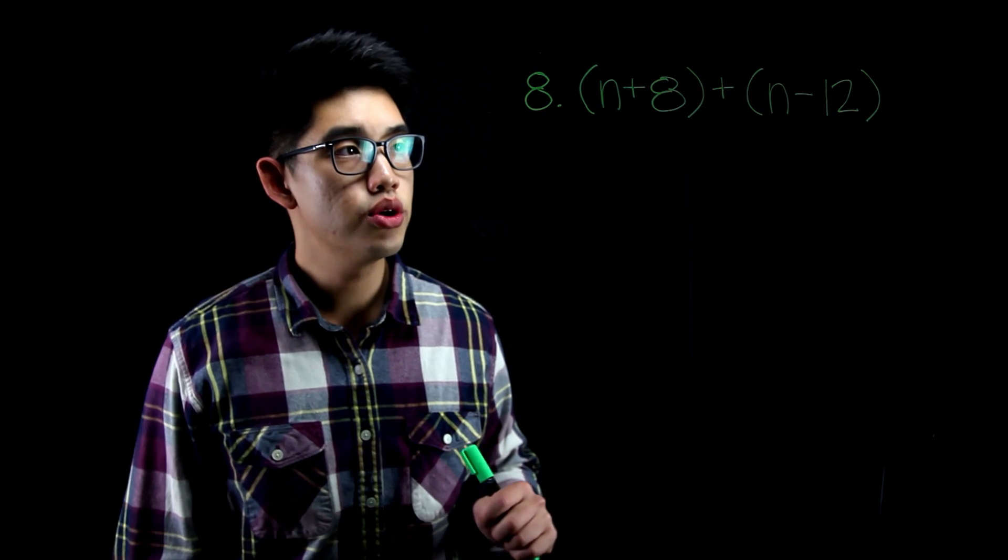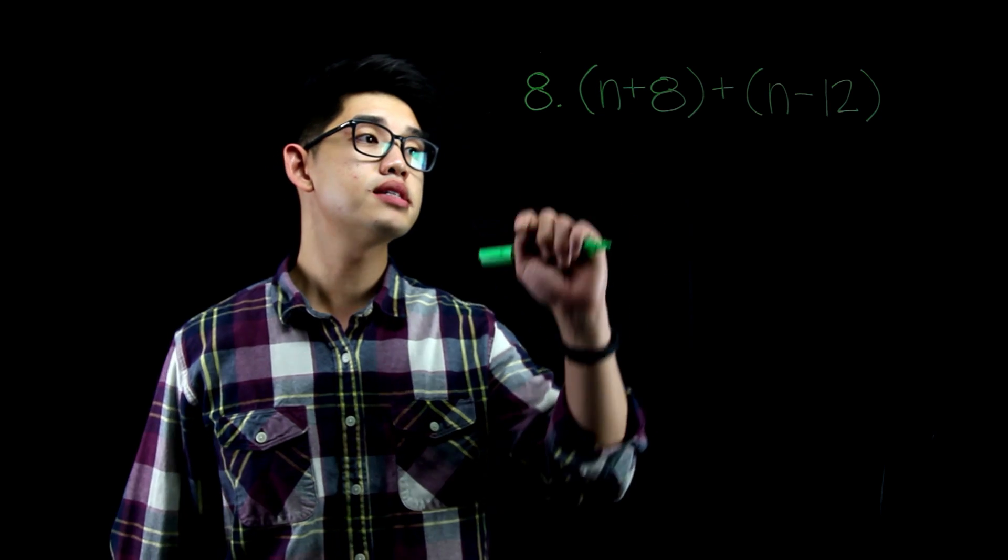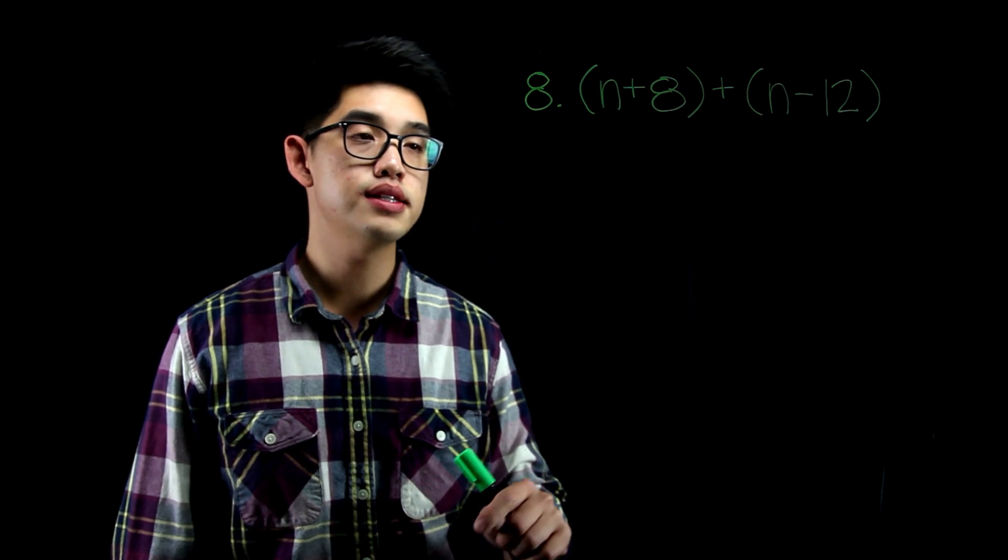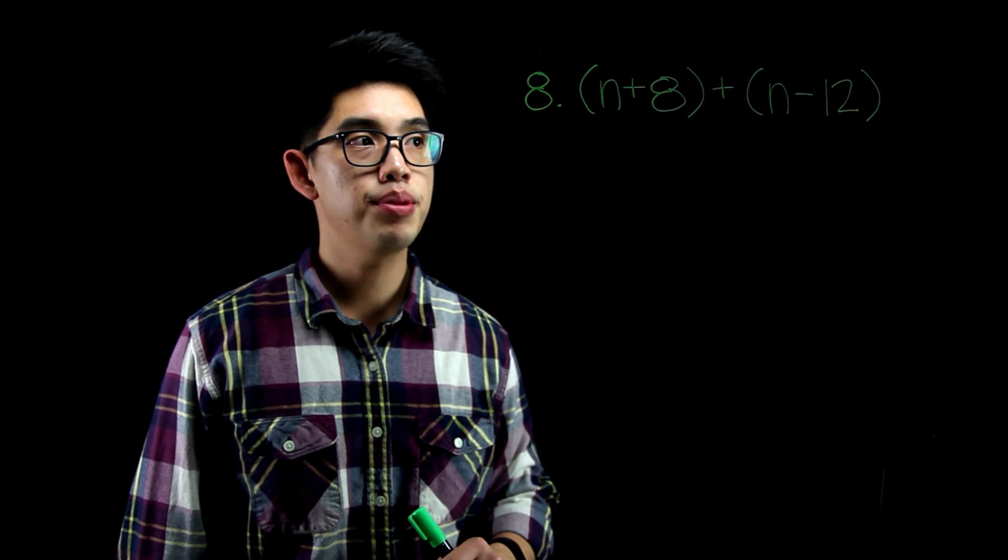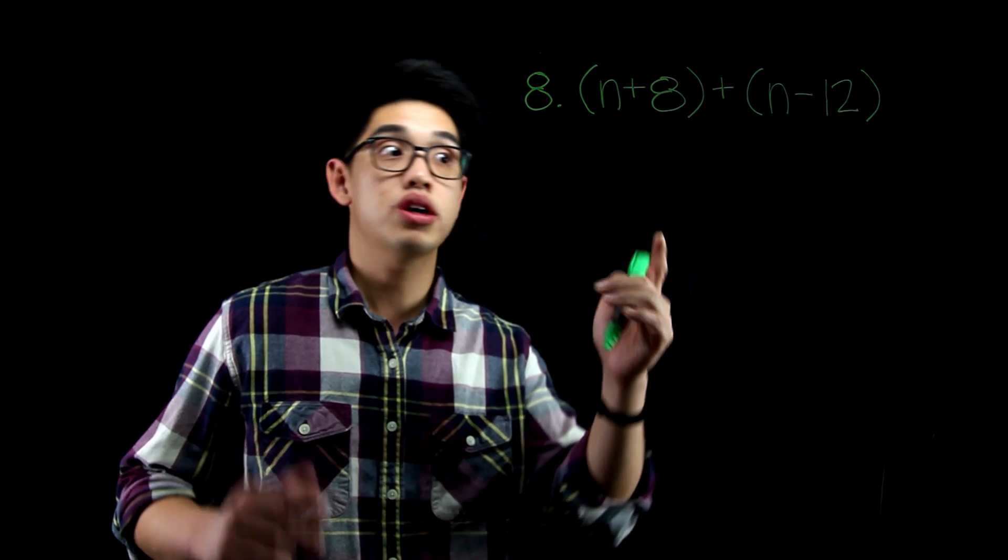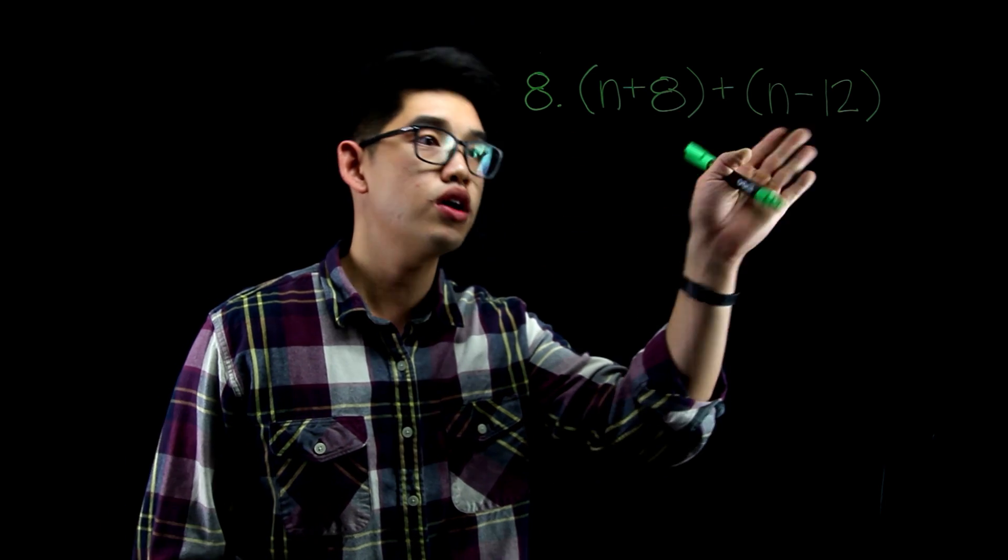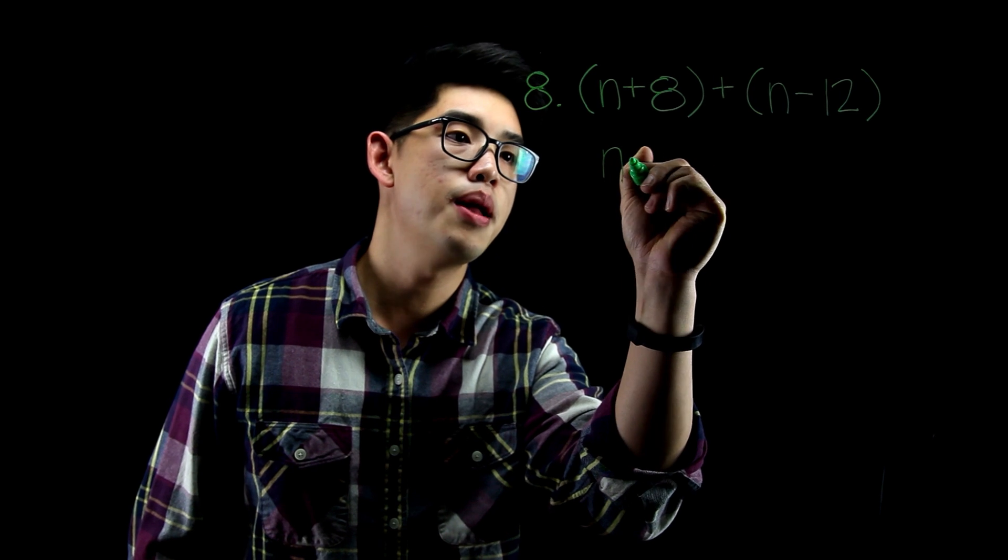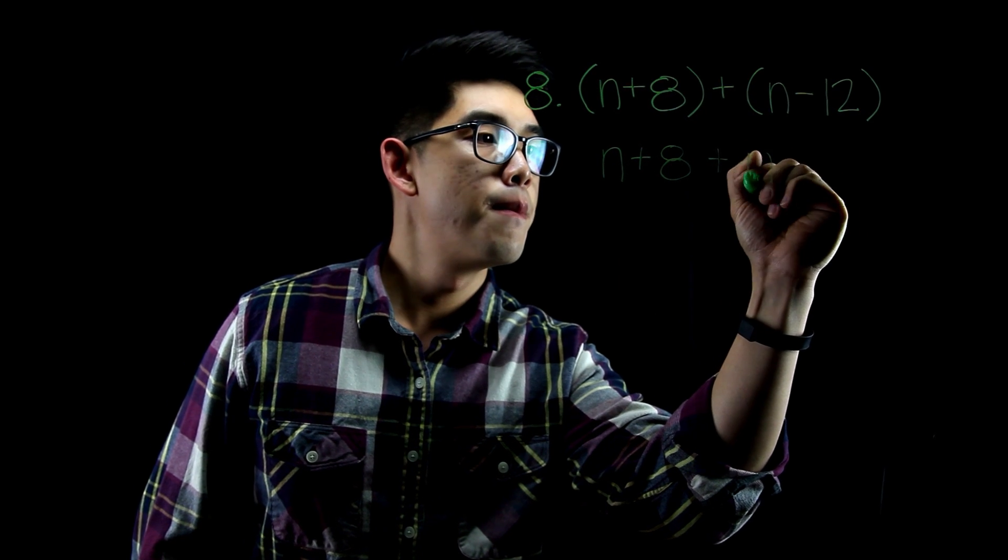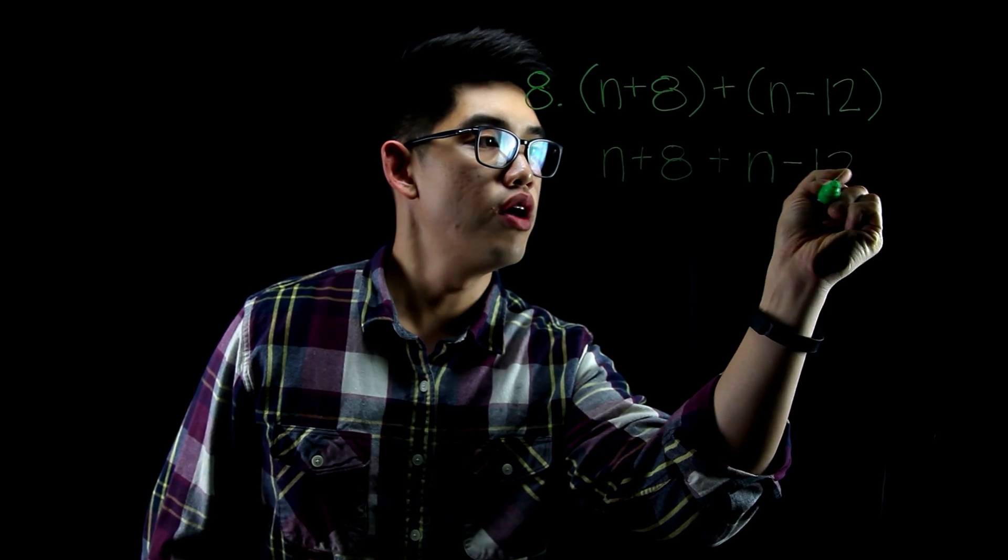For number 8, you have two linear expressions. You have n plus 8 plus n minus 12. First things first, we want to get rid of the parentheses. n plus 8 plus n minus 12 is the same thing as n plus 8 plus n minus 12. It doesn't really matter because you're adding the two linear expressions together. We can just take off the parentheses. So I'm just going to write n plus 8 plus n minus 12.